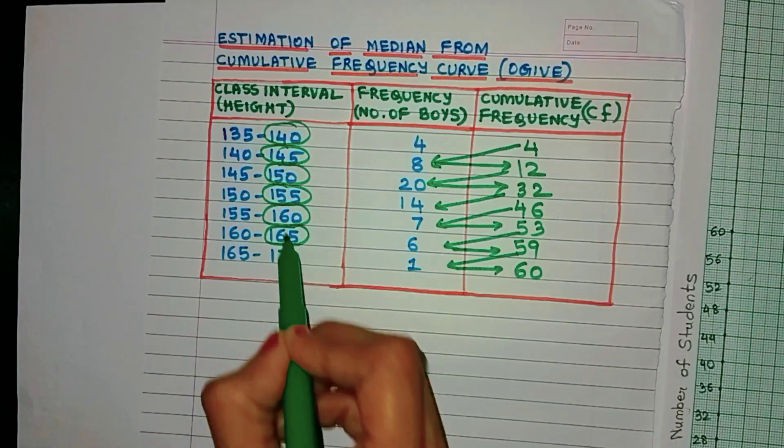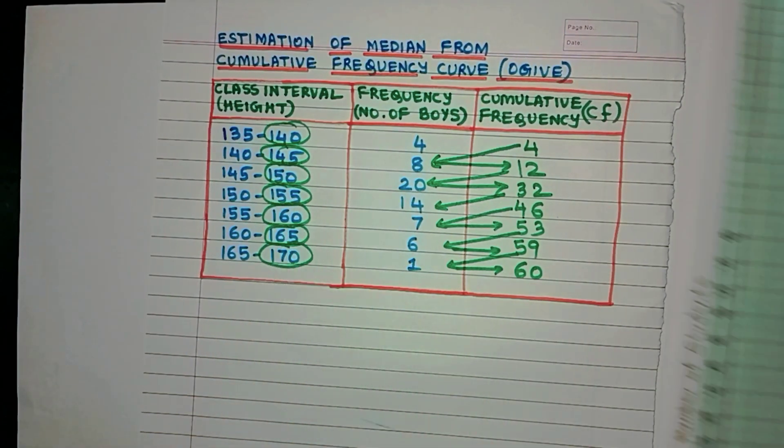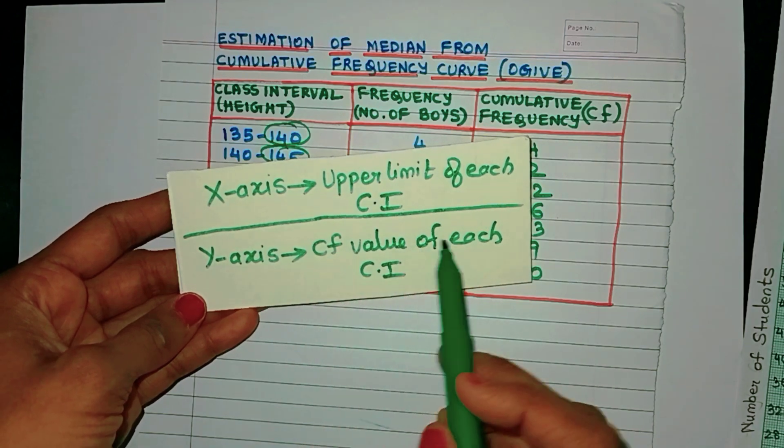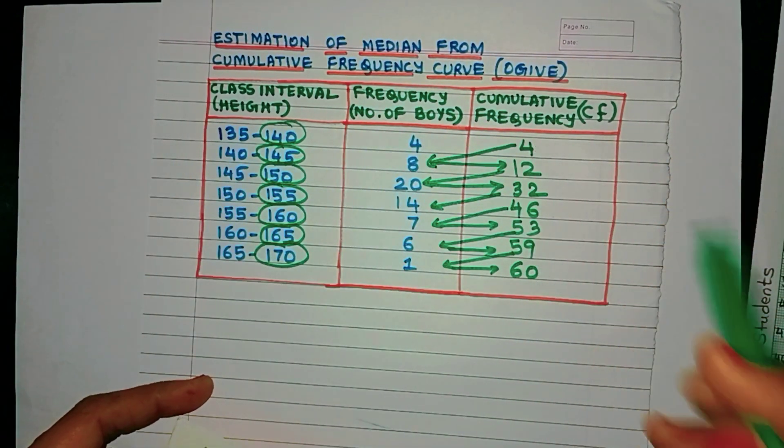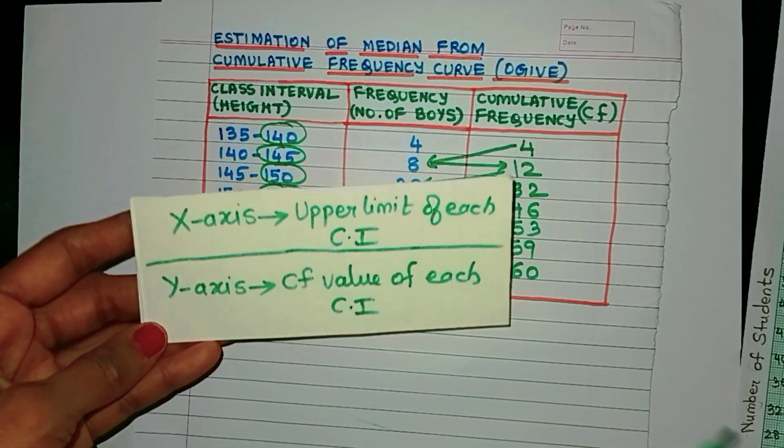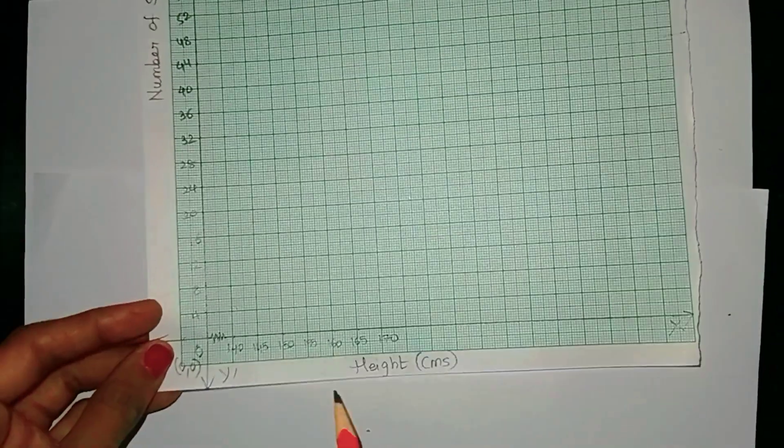So whatever class intervals we have got, let's just circle all the upper limits, because this is what is going in the x-axis of the graph. And for the y-axis, we need the CF value of every class interval, that is this entire column.